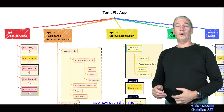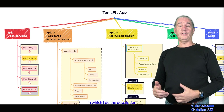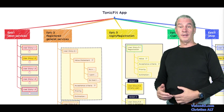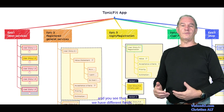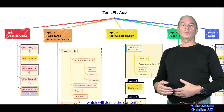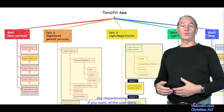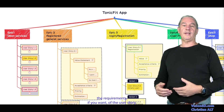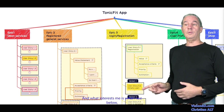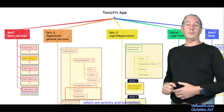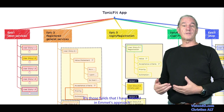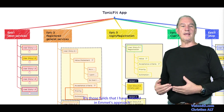I have now opened the mind map in which I describe the user stories. You see that we have different fields. We define the value, which defines the content — the requirements — of that user story. What interests me is below: the priority and estimation fields. Those are the fields that I have recreated in MS Project.